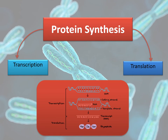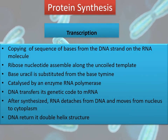The second biological function of nucleic acids is protein synthesis. There are two steps of protein synthesis: transcription and translation. Transcription is the copying of a sequence of bases from a DNA strand onto an RNA molecule. In this process, ribose nucleotides assemble along the uncoiled template instead of deoxyribose nucleotides, and the base uracil is substituted for the base thymine. The synthesis of RNA from DNA always takes place in the 5' to 3' direction. This process is catalyzed by an enzyme called RNA polymerase, through which DNA transfers its genetic code to mRNA. After synthesis, RNA detaches from DNA and moves from the nucleus to the cytoplasm, where it acts as a template for protein synthesis. Lastly, DNA returns to its double helix structure.